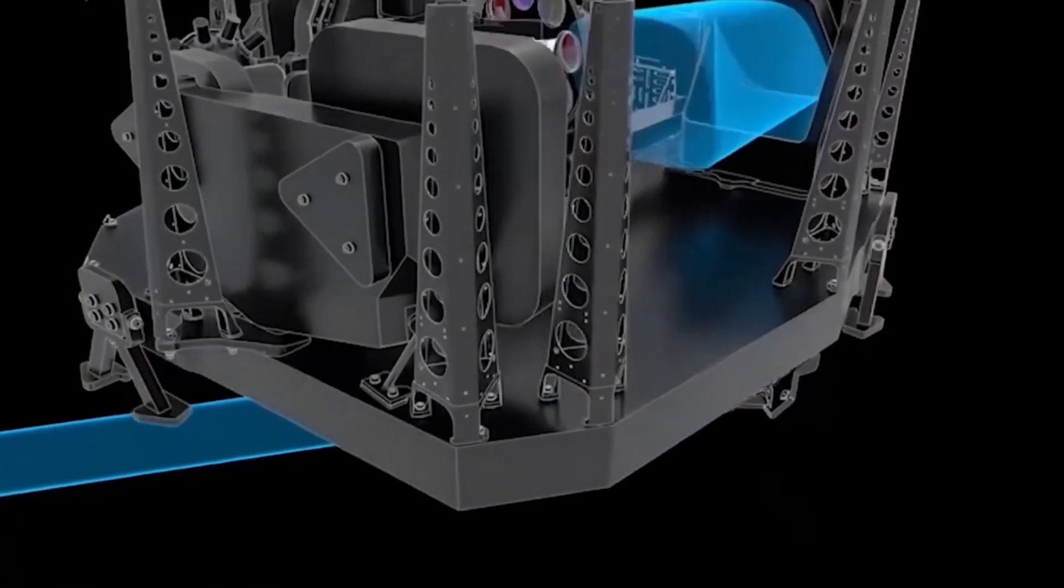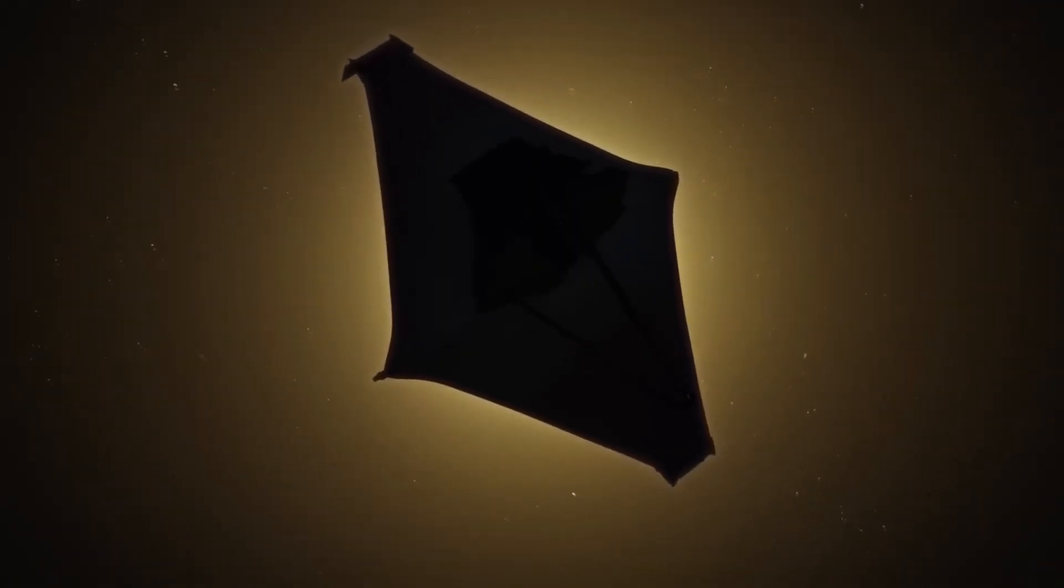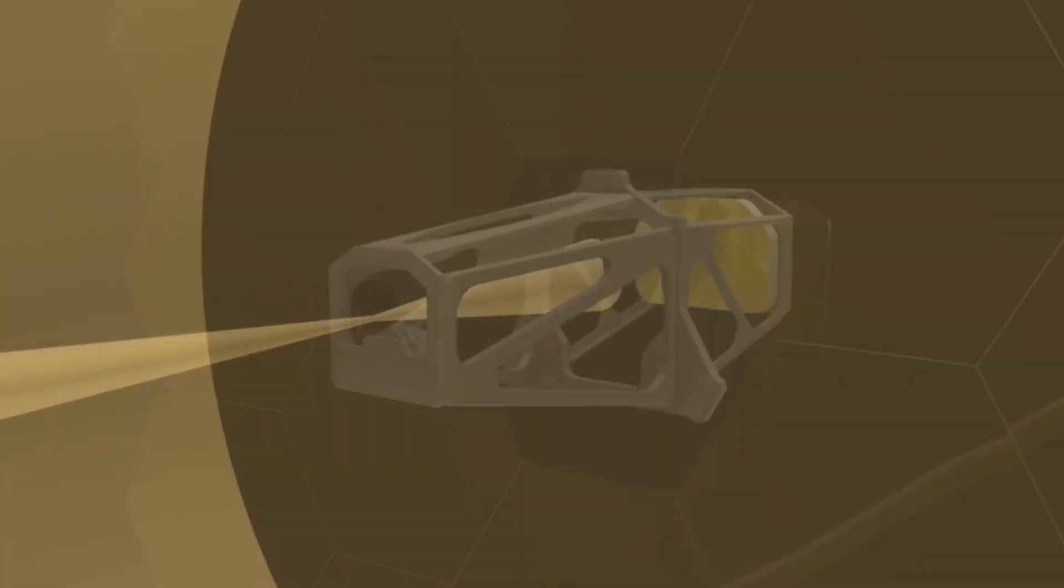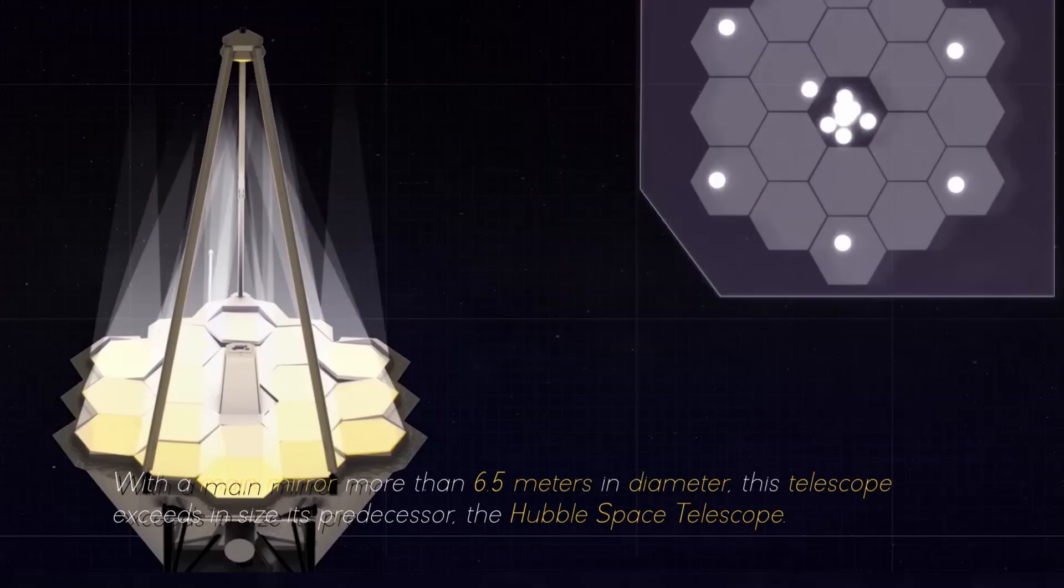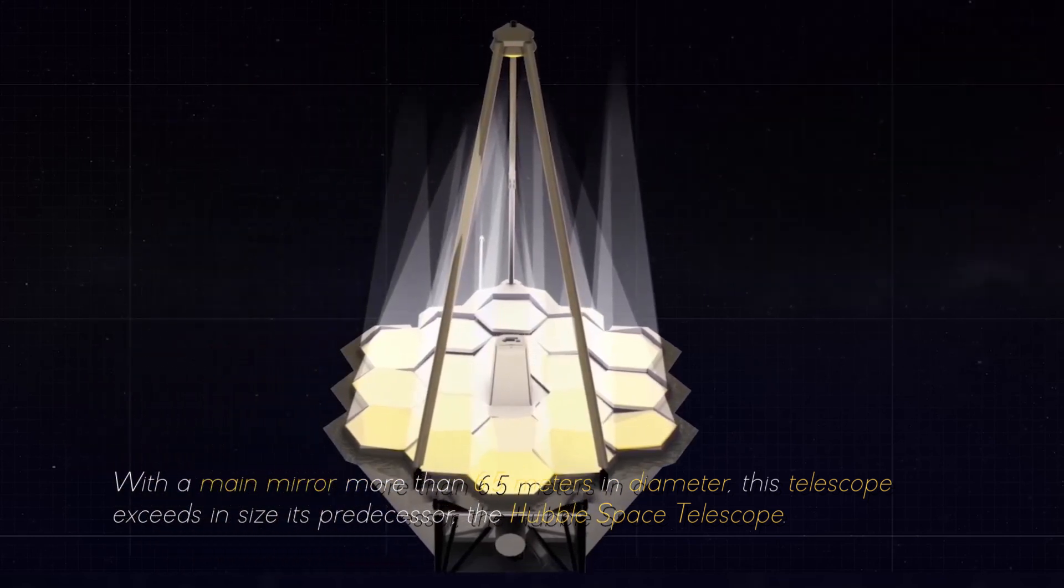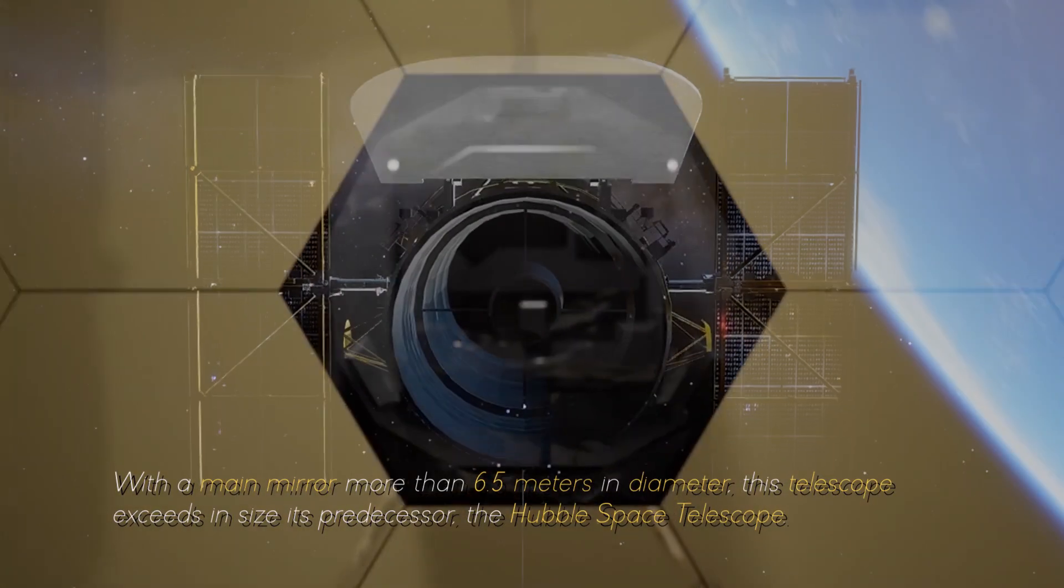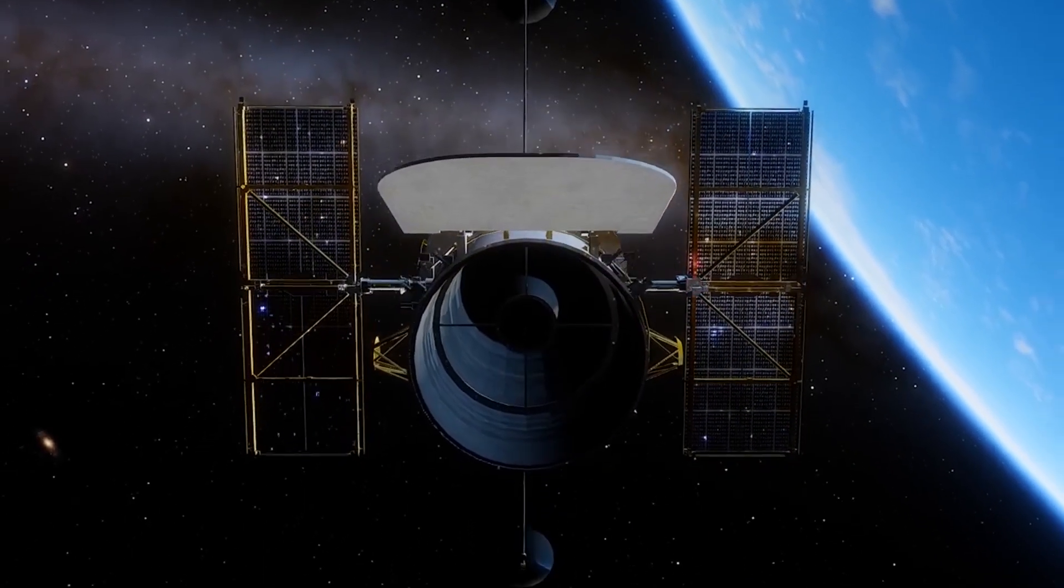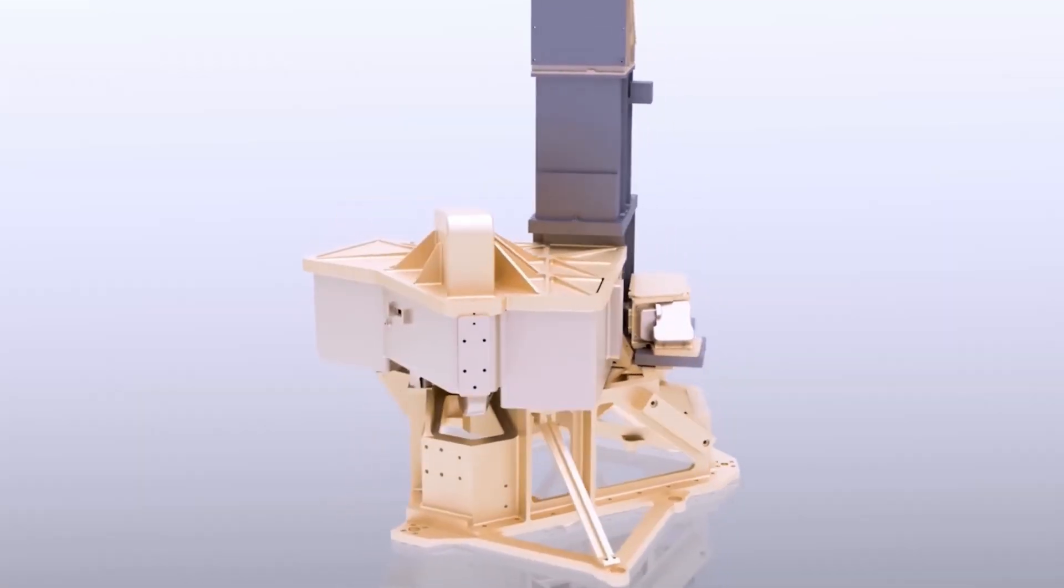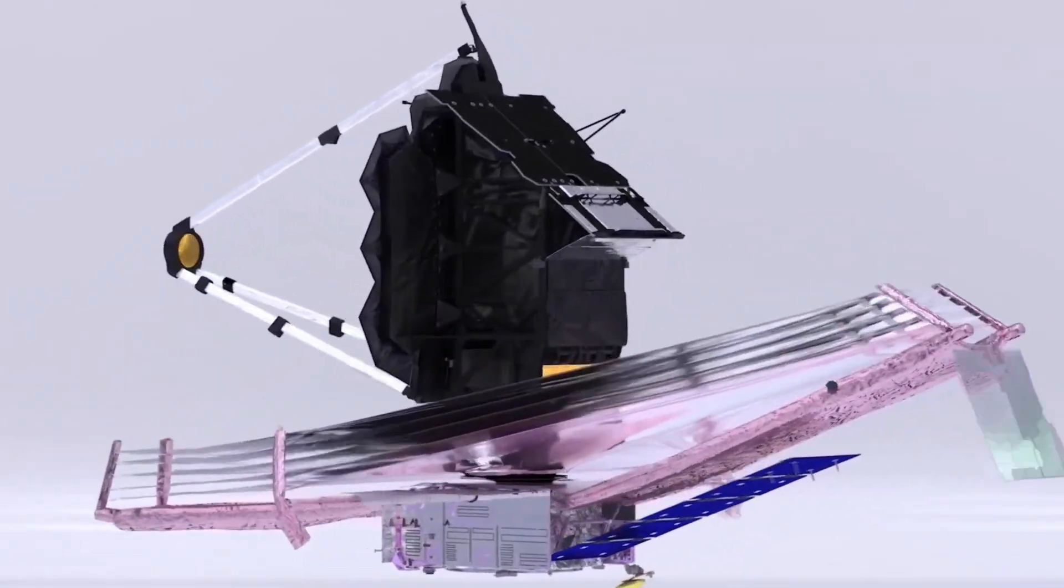The James Webb Space Telescope is equipped with an array of advanced scientific instruments carefully designed to observe the universe at an unprecedented range of wavelengths. With a main mirror more than 6.5 meters in diameter, this telescope exceeds in size its predecessor, the Hubble Space Telescope.